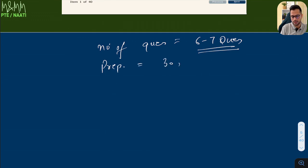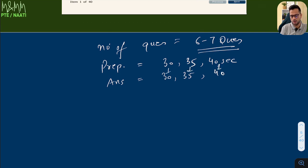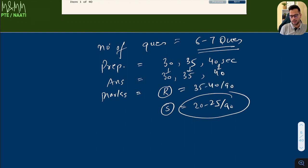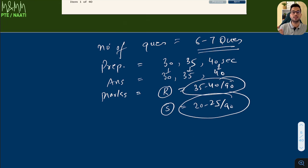Preparation time is either 30, 35, or 40 seconds, and the answering/recording time is the same as the preparation time. In terms of marking, you get marks in both your reading module and your speaking module. In speaking, you get about 20 to 25 marks out of 90, and in reading, about 35 to 40 marks out of 90. Just looking at the amount of marks shows how important this topic is — it's the backbone of your complete exam and the first topic, so we have to be very good at it.